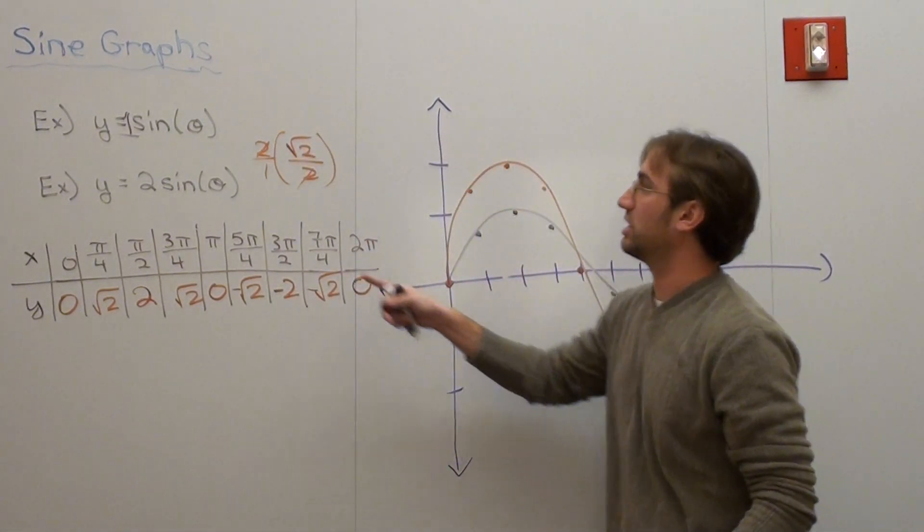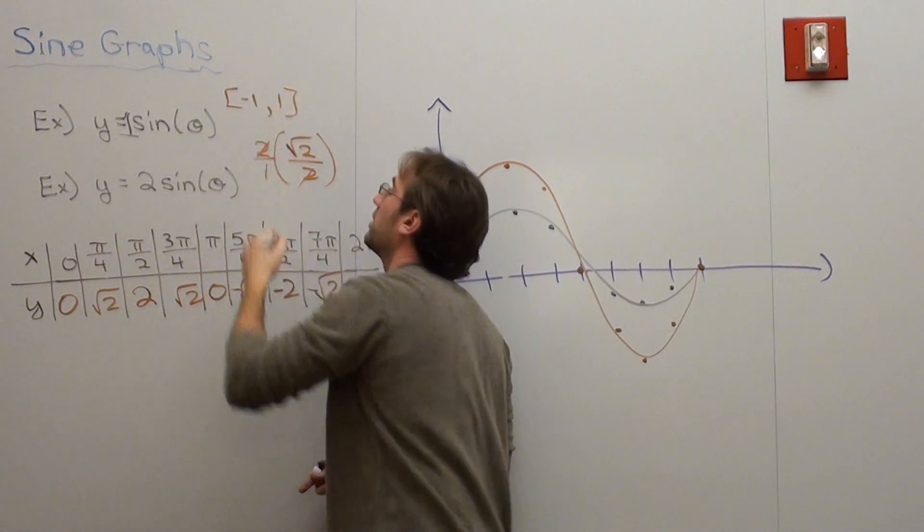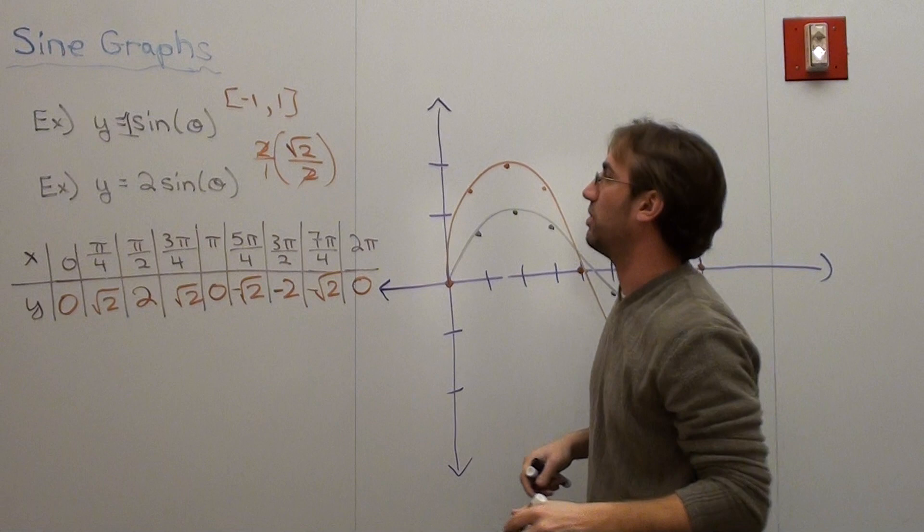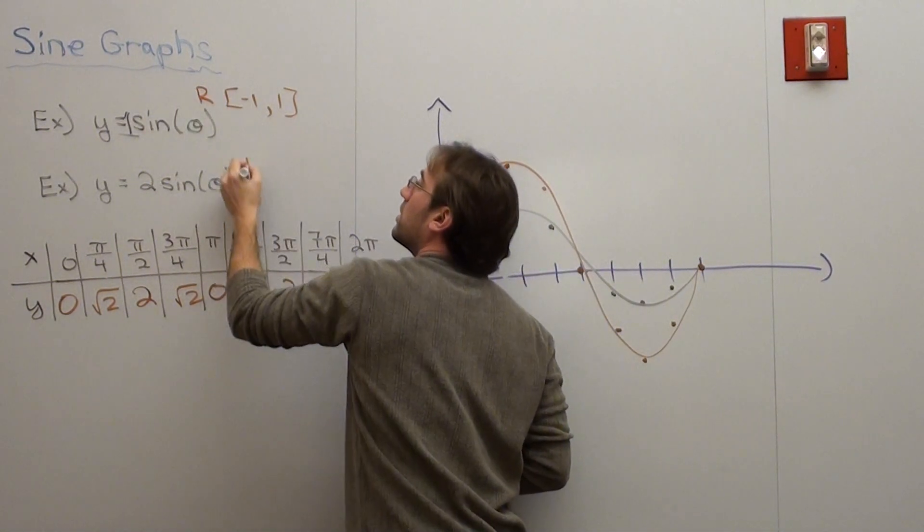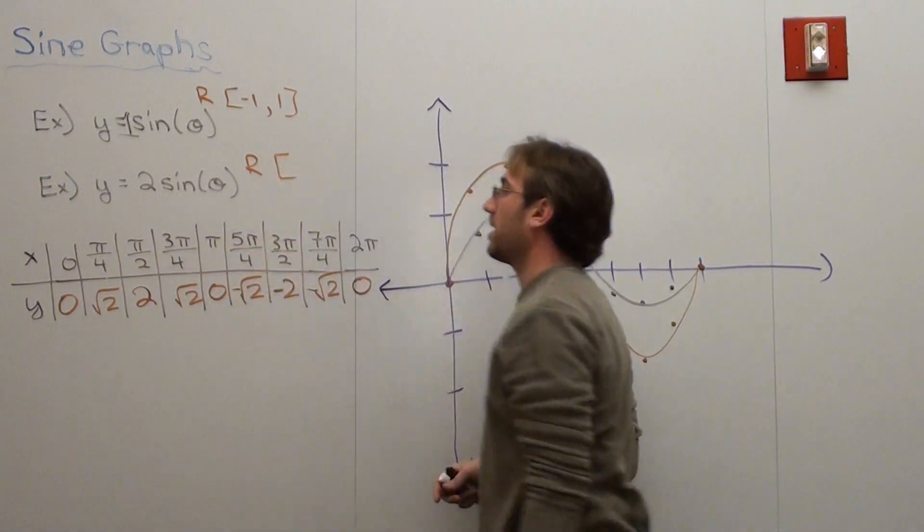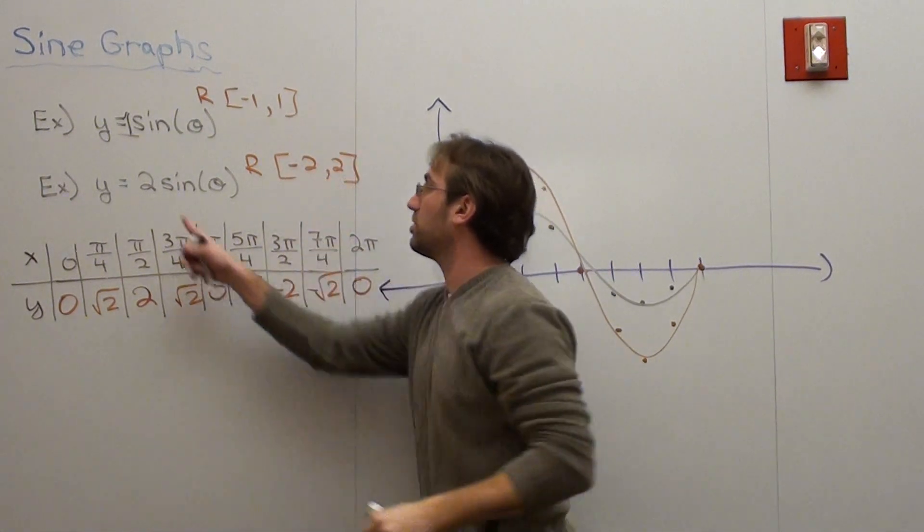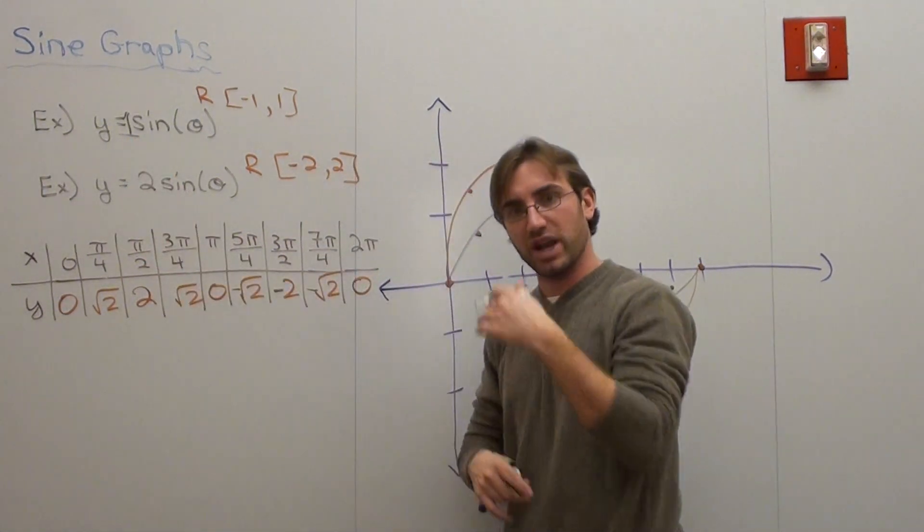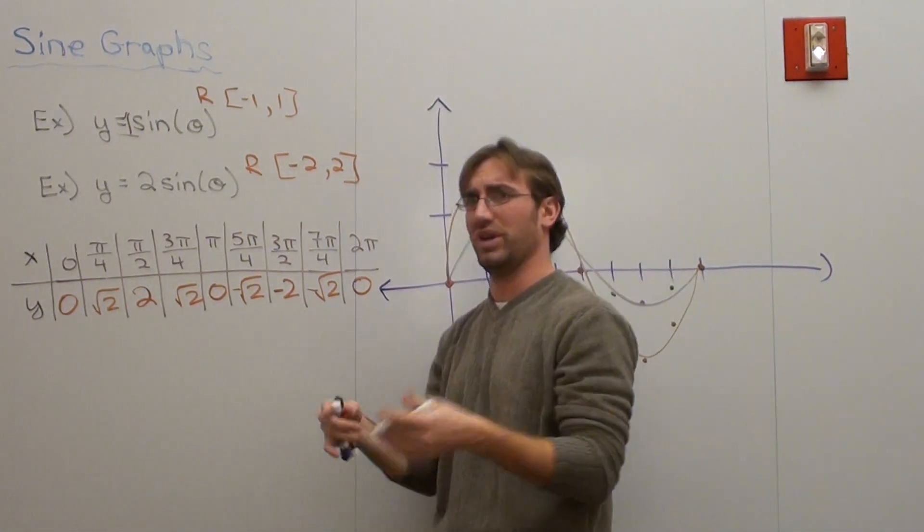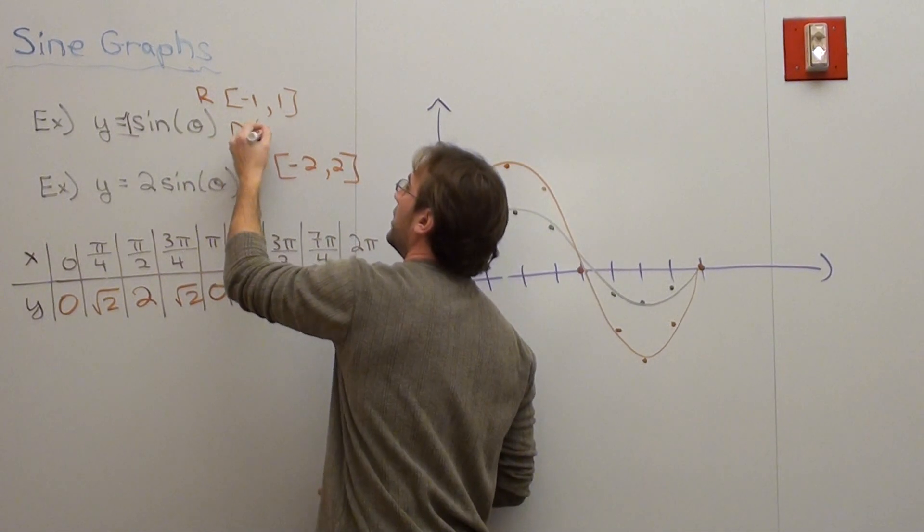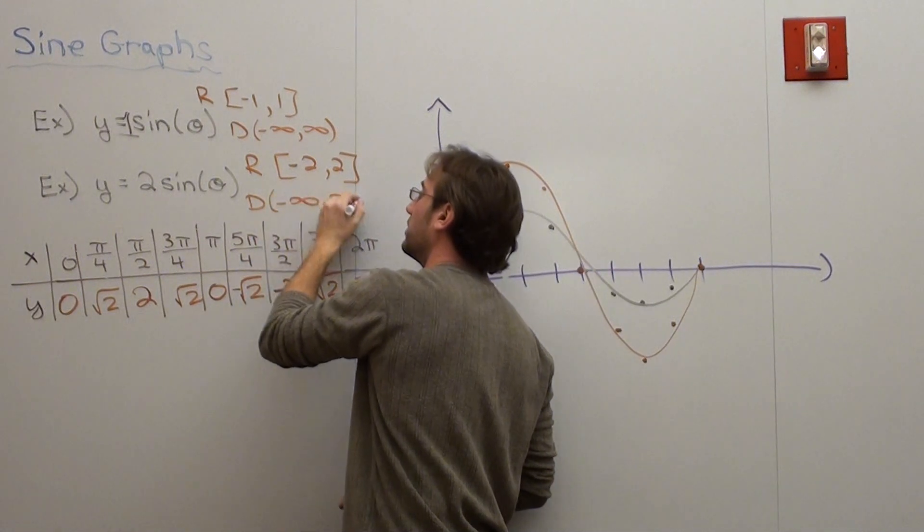The range, however, changes. For instance, the range here is from negative 1 to 1. Negative 1 is the lowest point, 1 is the highest point. The range here is from negative 2 to positive 2. So what the amplitude does is it affects the range of the graph, how high and how low the graph extends. It doesn't actually do anything to the domain. The domain is still negative infinity to infinity here and here.